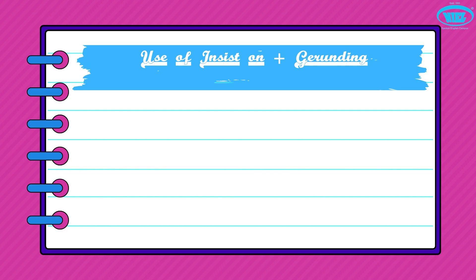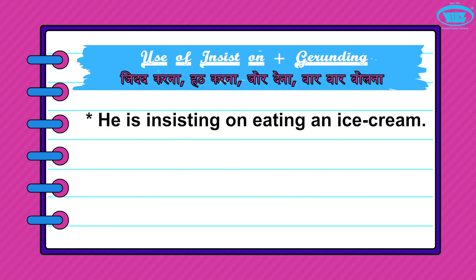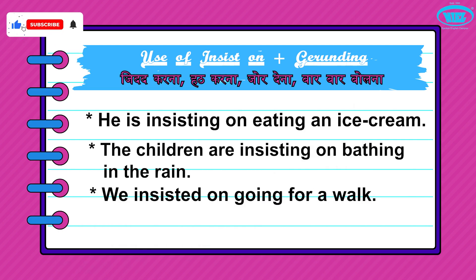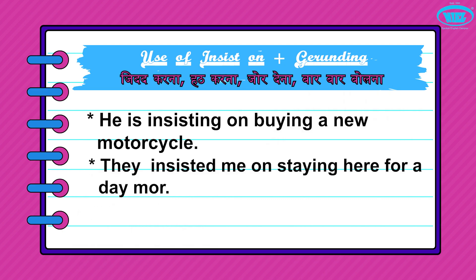The next pattern is 'insist on' + verb + ing, which means 'zid karna, zor dena, ya baar baar bolna' — to insist or repeatedly demand. For example: He is insisting on eating an ice cream. The children are insisting on bathing in the rain. We insisted on going for a walk. He is insisting on buying a new motorcycle. They insisted on me staying here for a day more.